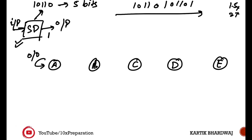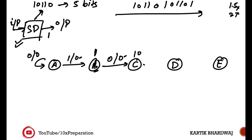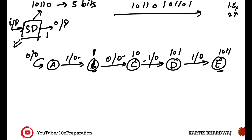We'll write the state diagram by following the correct pattern sequence. If a 1 comes in state A, we jump to state B — meaning we've already matched '1'. From B, if a 0 comes, we jump to state C (output 0, pattern not yet detected). From C, if a 1 comes, we jump to state D (matching '101'). From D, if a 1 comes, the output is still 0, and we move toward state E, representing '1011' matched.